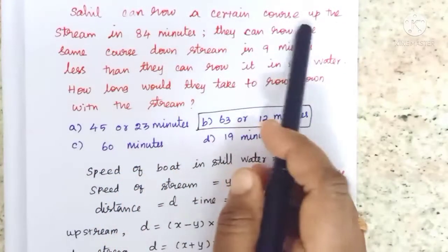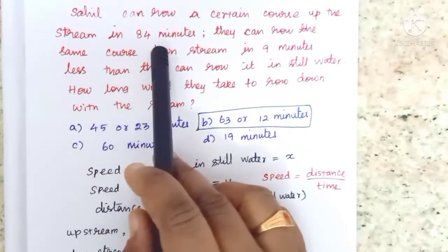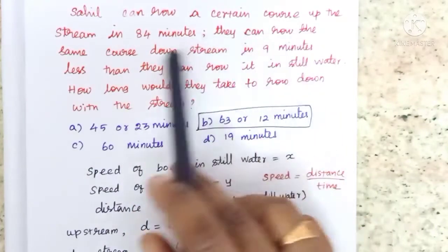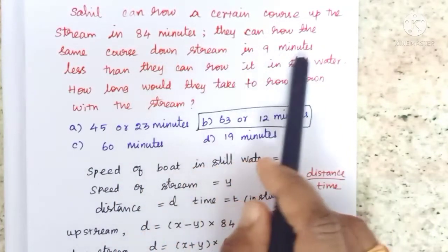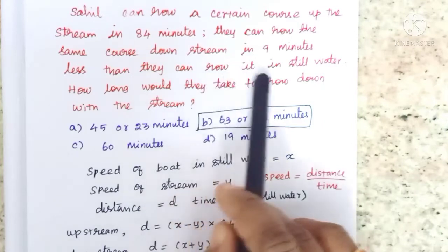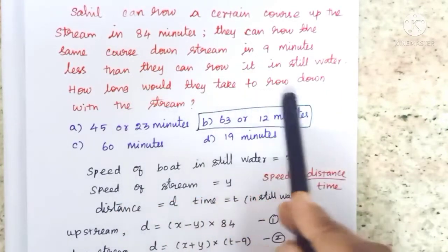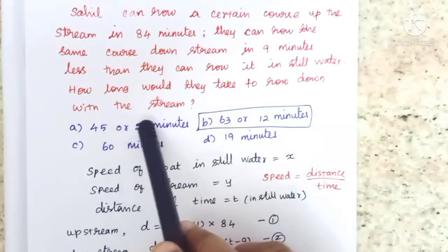Sahil can row a certain course upstream in 84 minutes. They can row the same course downstream in 9 minutes less than they can row it in still water. How long would they take to row down with the stream?